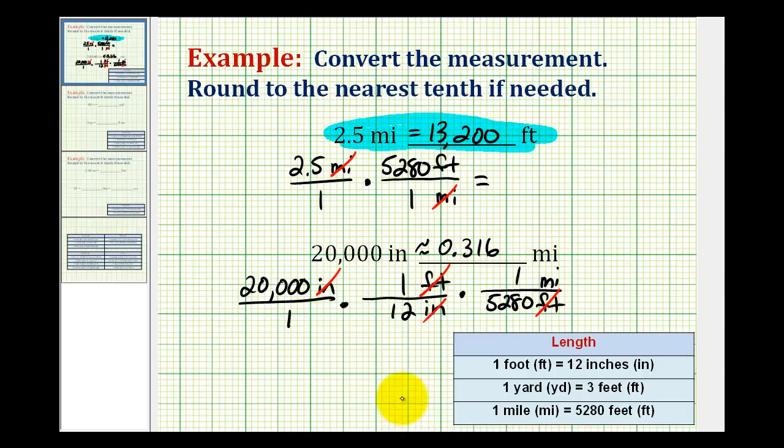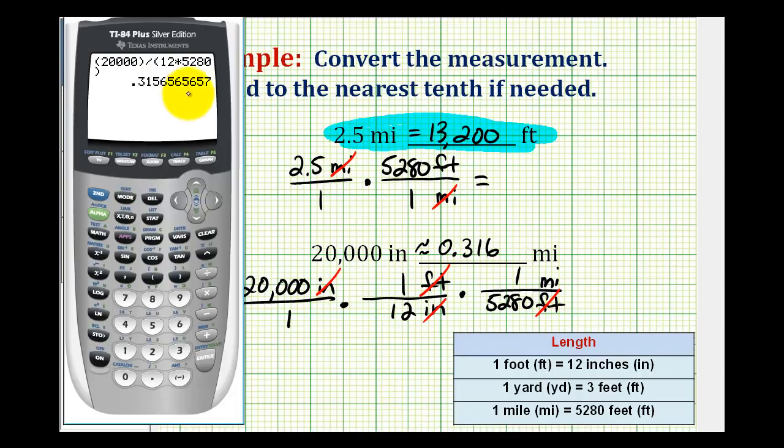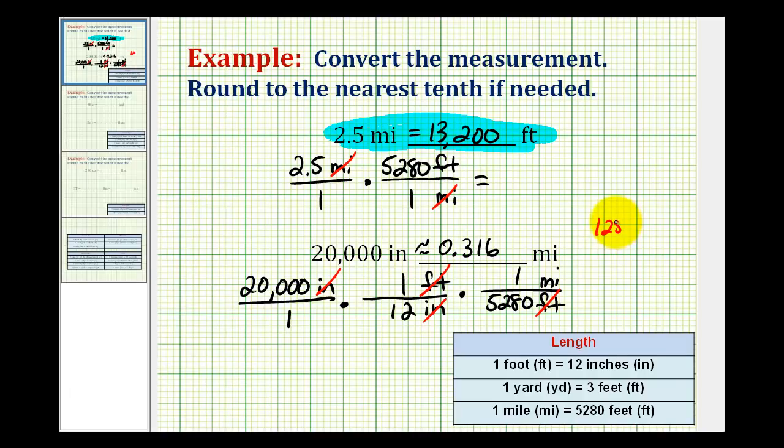Just in case we need an exact value, we can convert this decimal to a fraction by pressing math, enter, enter. So it's exactly 125 over 396 miles. Here's our decimal approximation in miles, and here's the exact fractional value in miles.